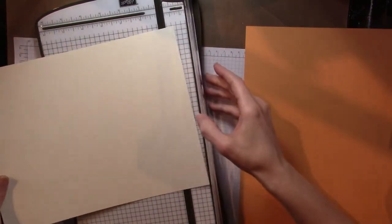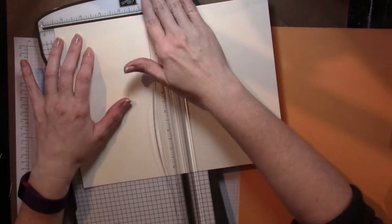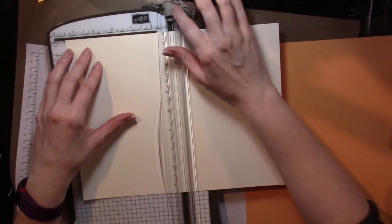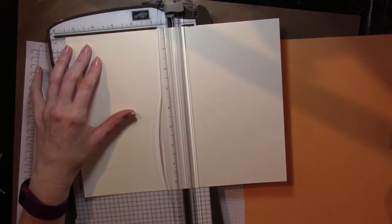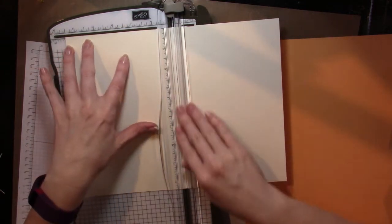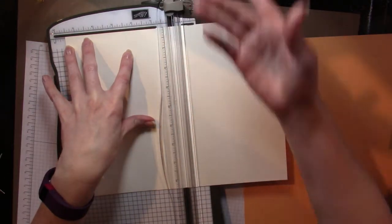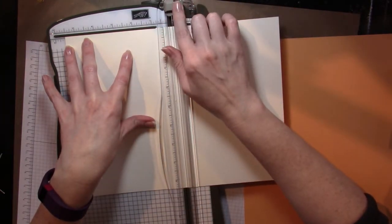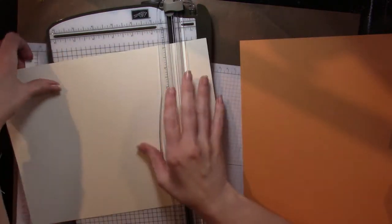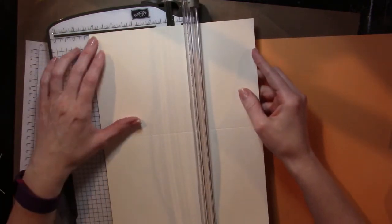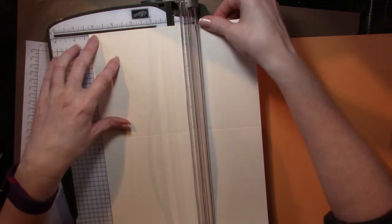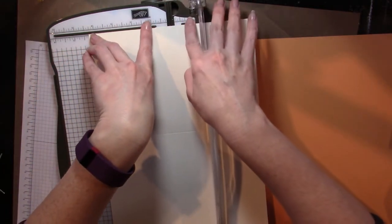I don't have to pull out the arm a whole lot, because everything I need is pretty much on this grid. Back to the actual tutorial. I've got a piece of eight and a half by eleven, very vanilla. And I'm going to show you how I score and cut, and I can have two cards, and it's done. So I want this to be top folding, so I'm going to line it up at five and a half. Now I keep my score blade up here, and I keep my cutting one down at the bottom.